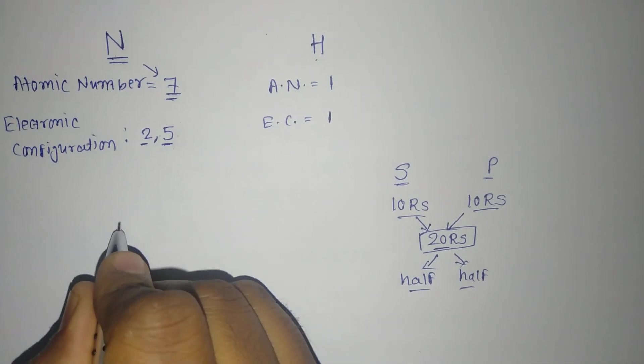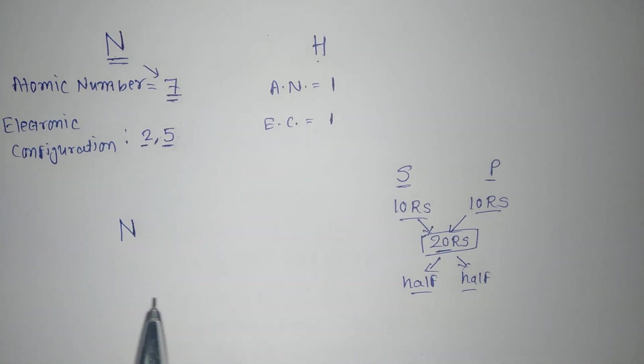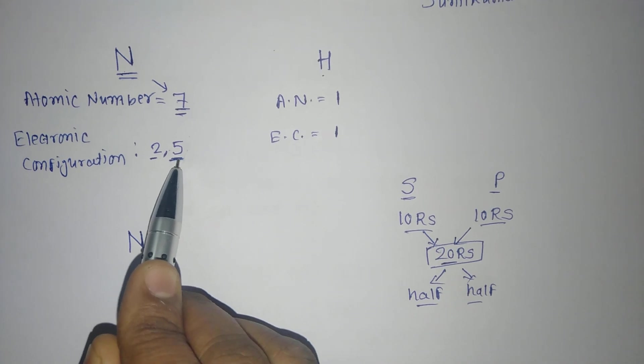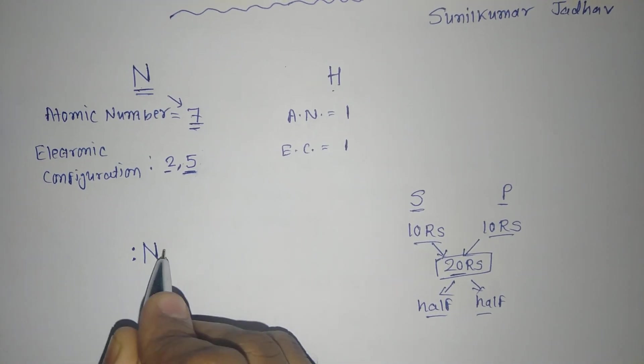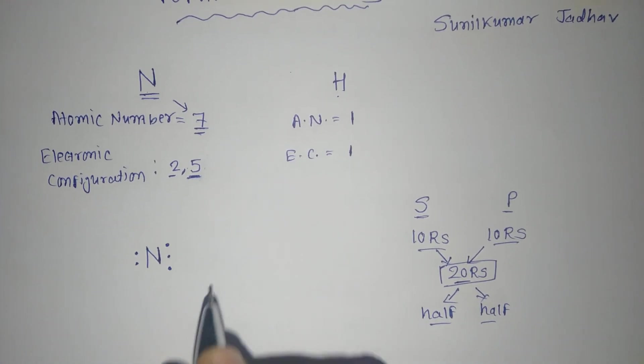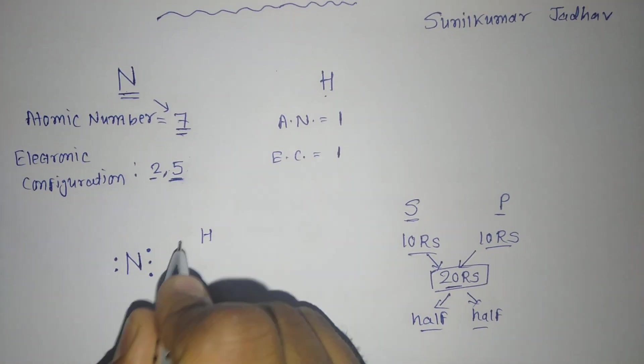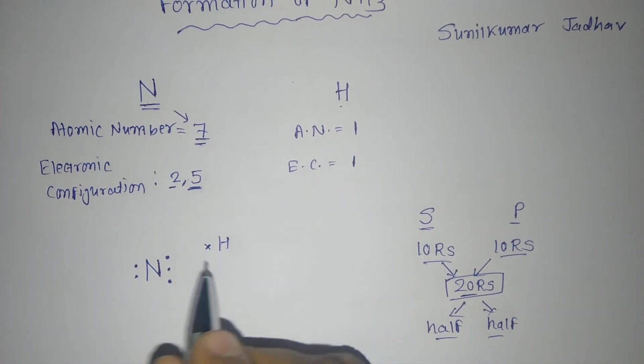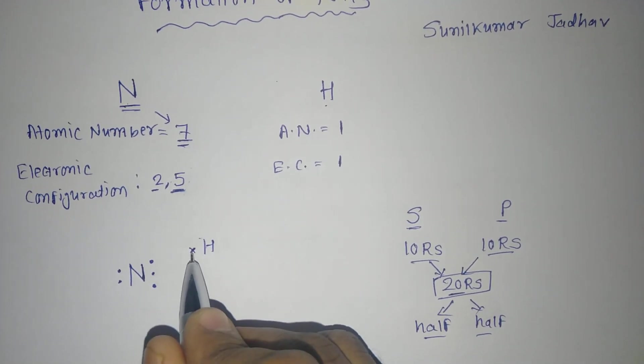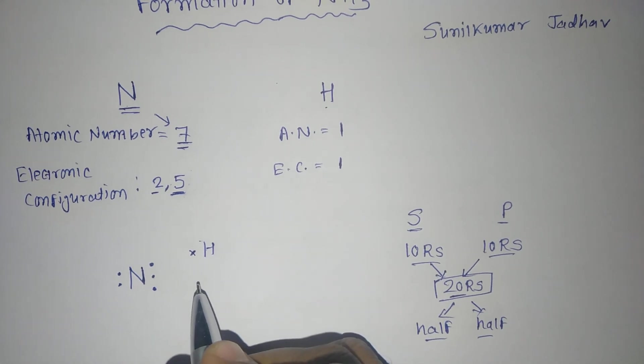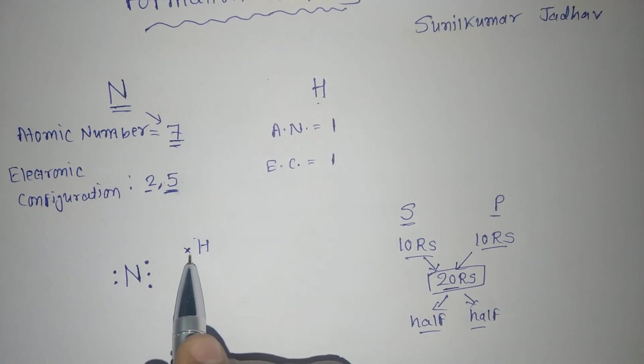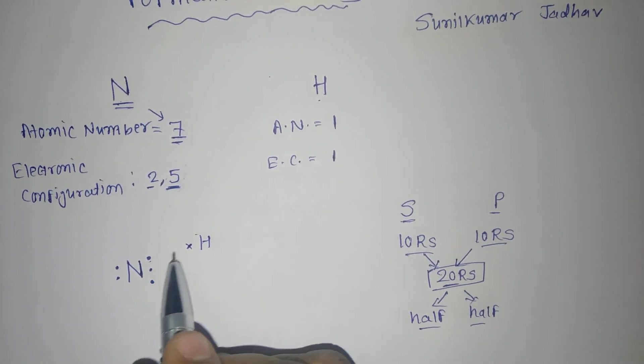Here also same thing is happening. If we are writing about the electron dot structure of nitrogen, it has outermost orbit with 5 number of electrons. So its configuration will be 1, 2 here, and 1, 2, and 3. This is for the nitrogen. If you are talking about hydrogen, it has only 1 number of electron in the outermost shell.